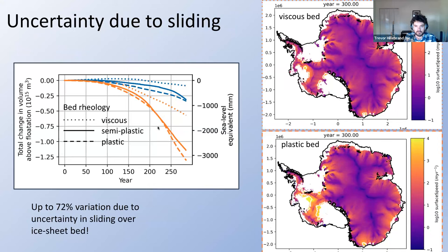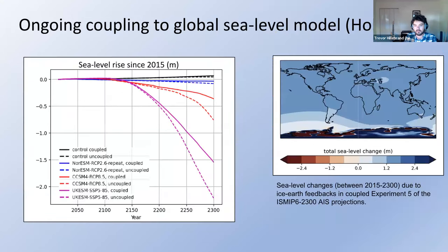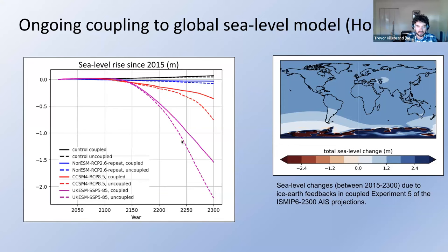We've also been examining uncertainty due to the physics of sliding over the glacier bed. Using the semi-plastic bed rheology as our baseline, spanning viscous to plastic end-members, we found up to a 70 percent variation relative to our baseline ensemble. Additionally, Holly Hahn, a postdoc in our group, has been working on coupling our ice sheet model to a global sea level model, since sea level variations differ widely over space and time due to Earth's gravitational structure. Coupling the sea level model to the ice sheet model leads to a large reduction in mass loss due to these feedbacks—ongoing but promising work.